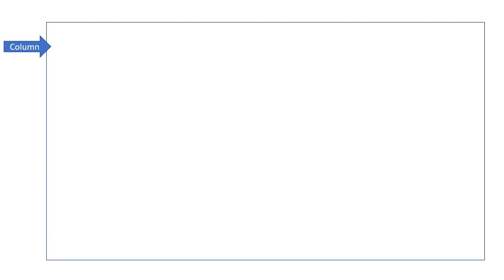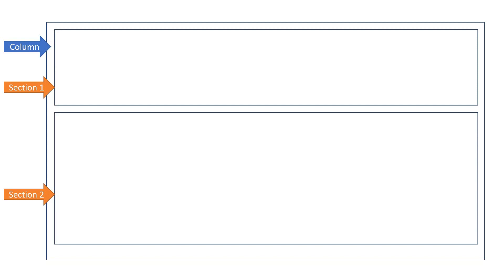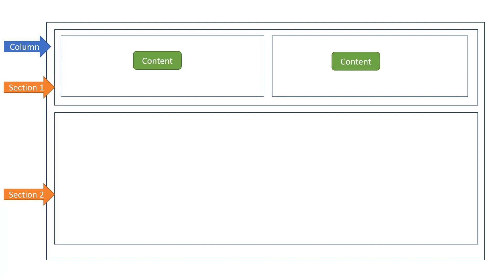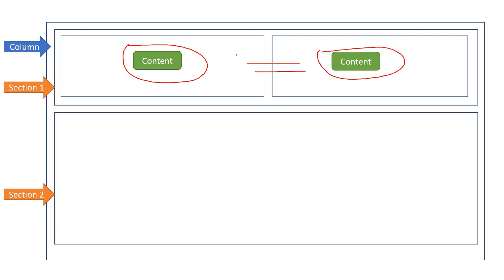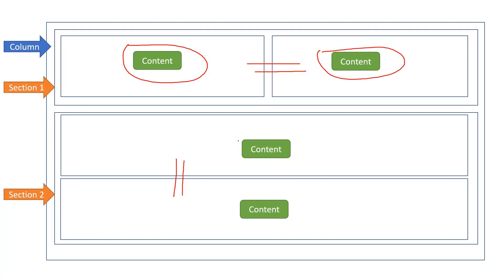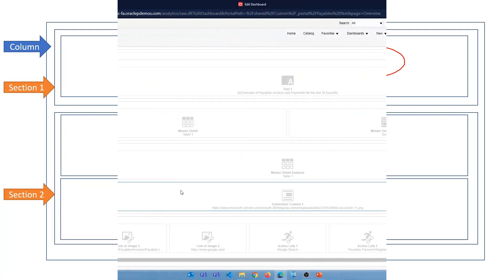Looking at a dashboard page, you can have one or more columns, one or more sections in a column, and each section can have one or more content items. Content within a section can be horizontally aligned — displayed left to right — or you can have a section where content is vertically aligned, displayed top to bottom, with content one here, content two here stacked vertically.